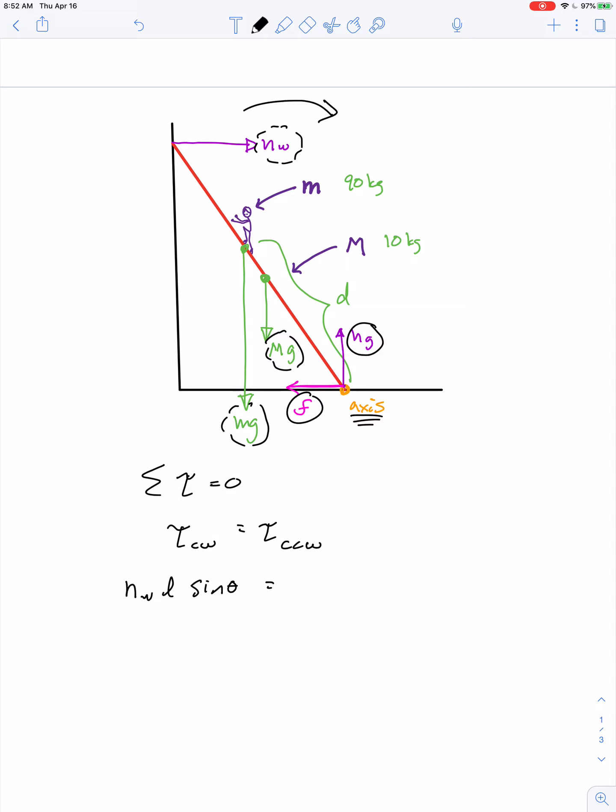There are two forces that contribute to the counterclockwise torque, both the weight vectors. The clockwise torque is the normal force of the wall times the lever arm, which is the full length of the ladder, times sine of theta.